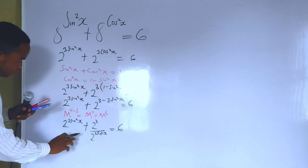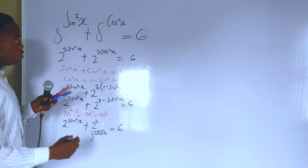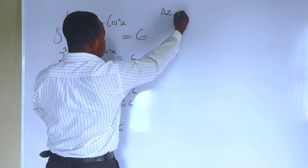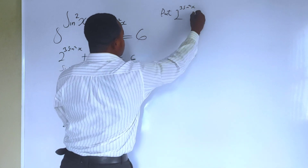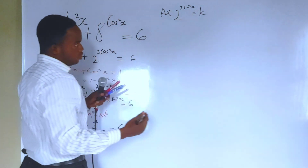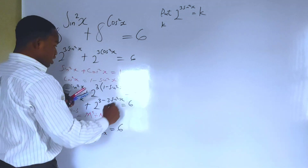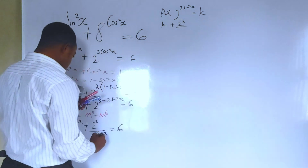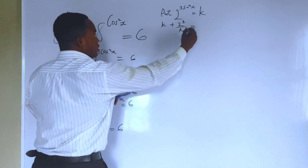At this point, we notice that we are having 2 raised to power 3 sin squared of x throughout. So let us substitute: let k equal 2 raised to power 3 sin squared of x. Then everything becomes k plus 2 raised to power 3 divided by k, all equals 6.